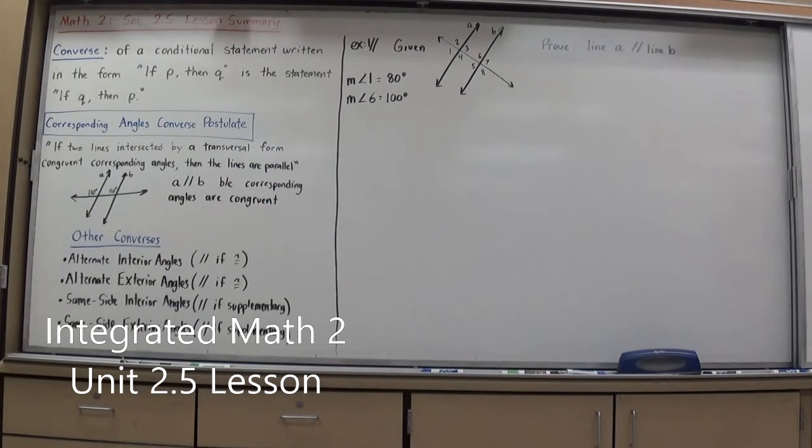And in the previous section we dealt with parallel lines intersected by a transversal. Parallel lines intersected by a transversal and found all these theorems that proved different angle measures are congruent when the lines are parallel. Well, on a converse then we would reverse that and say, if the angles are congruent, the lines must be parallel. So we're going to completely reverse it. And that's what the corresponding angles converse postulate is.